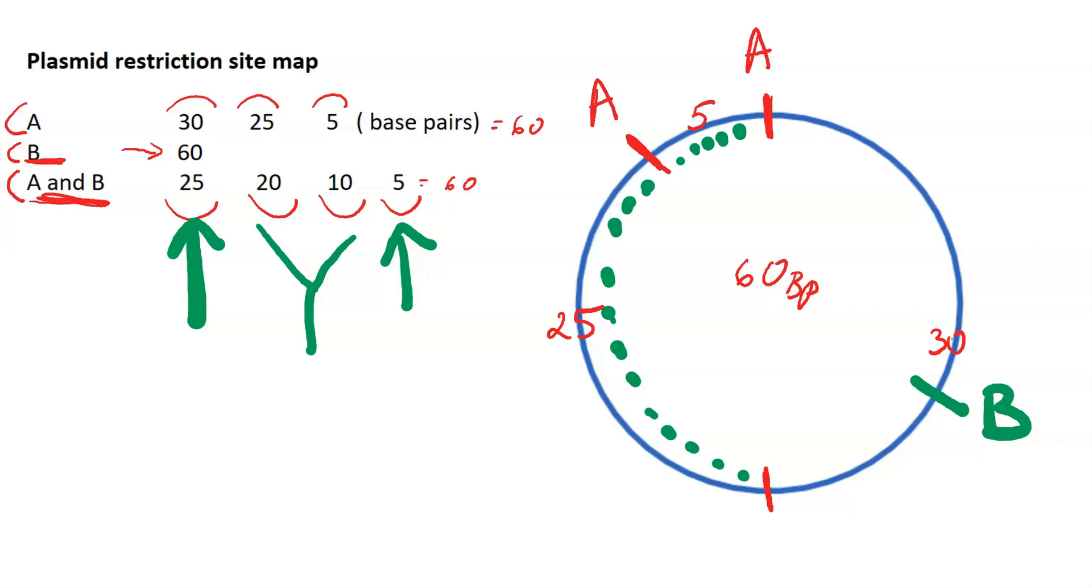This fragment is now 20 base pairs. The 30 no longer exists. Then we have 10 base pairs over here. Could you actually place your restriction site for enzyme B somewhere else and make that 10 and the other one 20? You actually can.